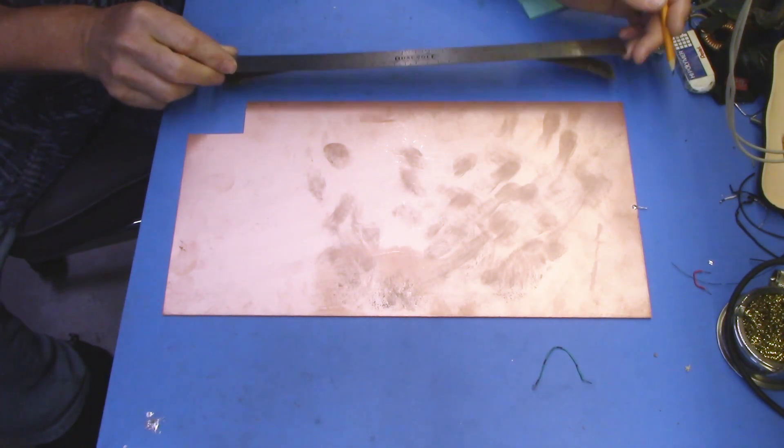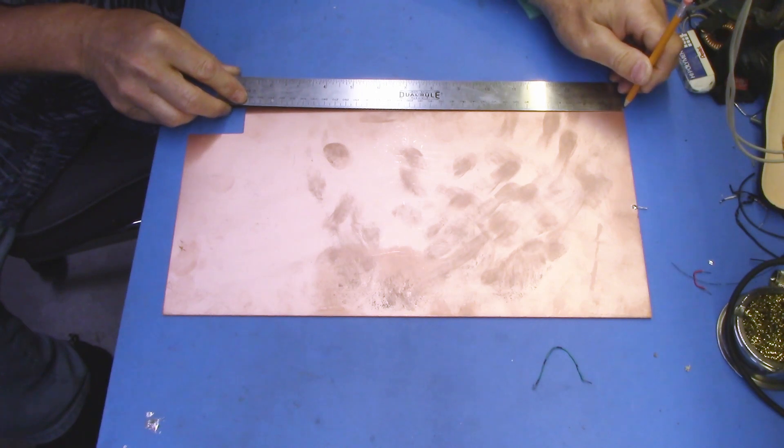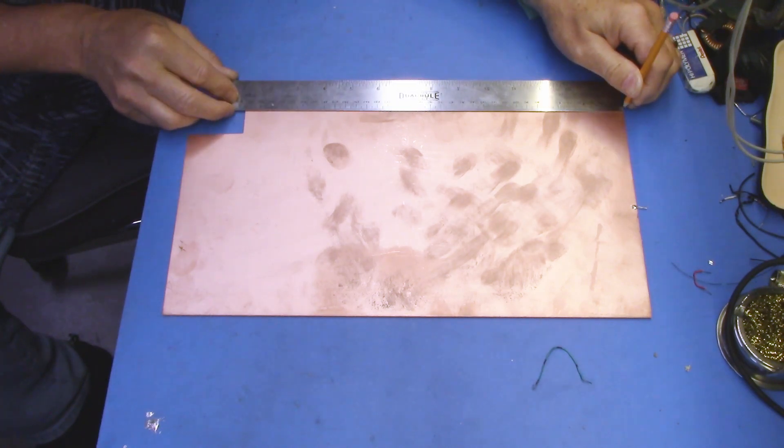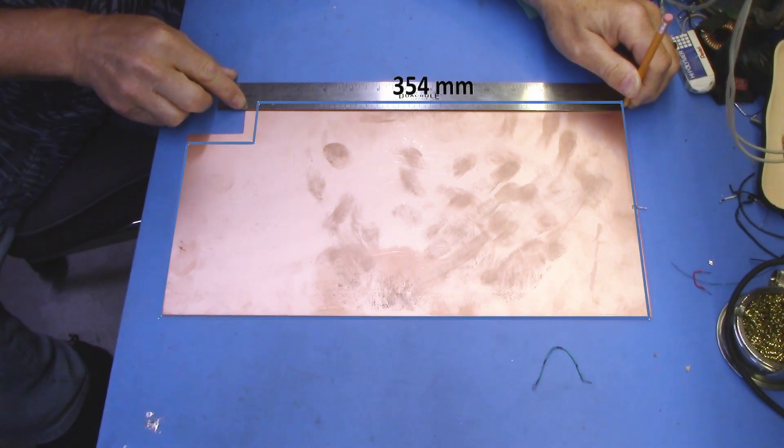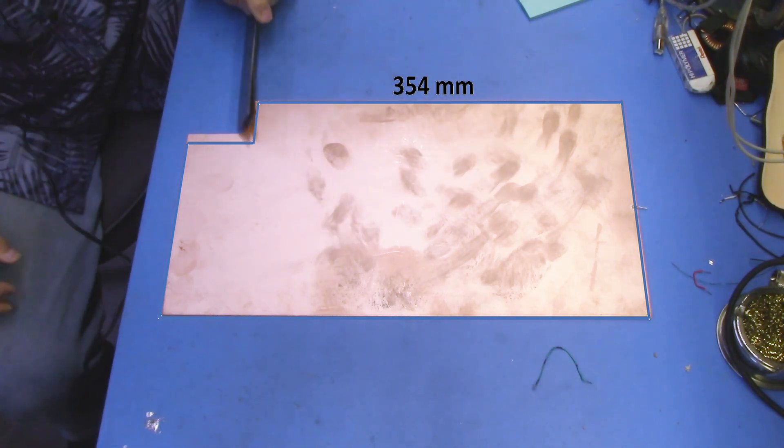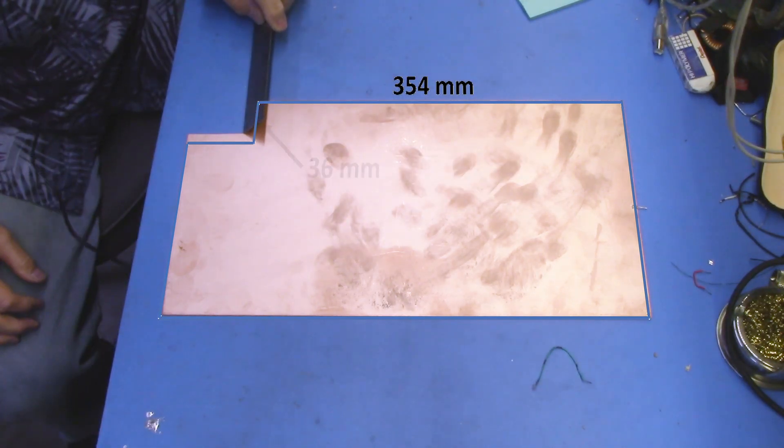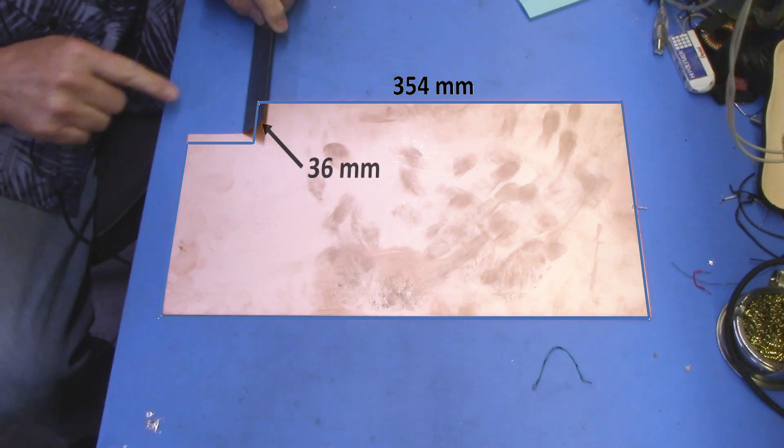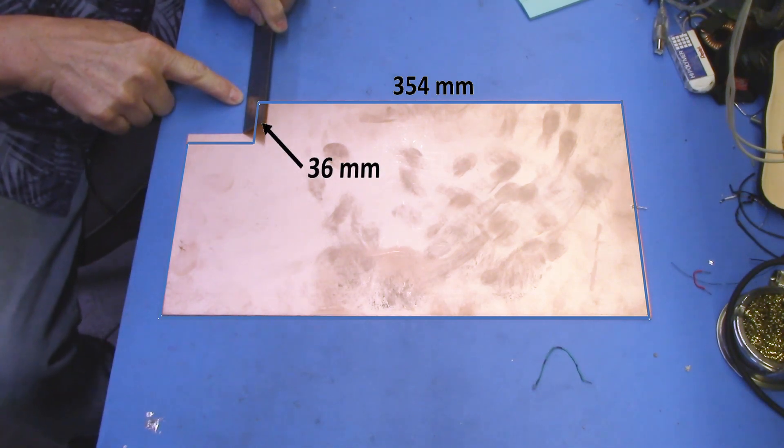We carefully line up the end of our precision ruler here and we look here and it says we have 354 millimeters for the length of this. And then we come here and we very carefully measure this length and that comes out to be 36 millimeters.